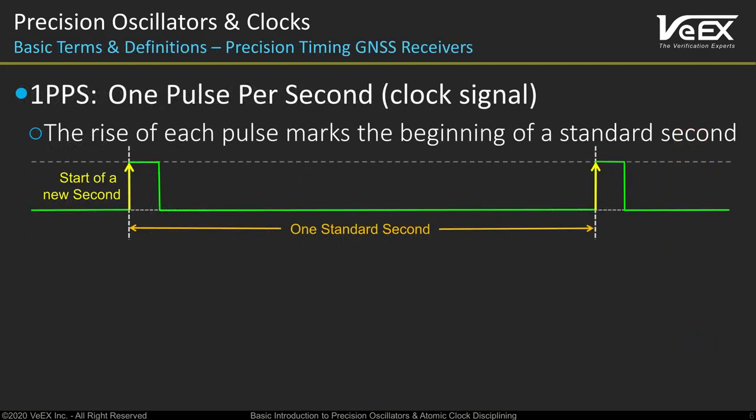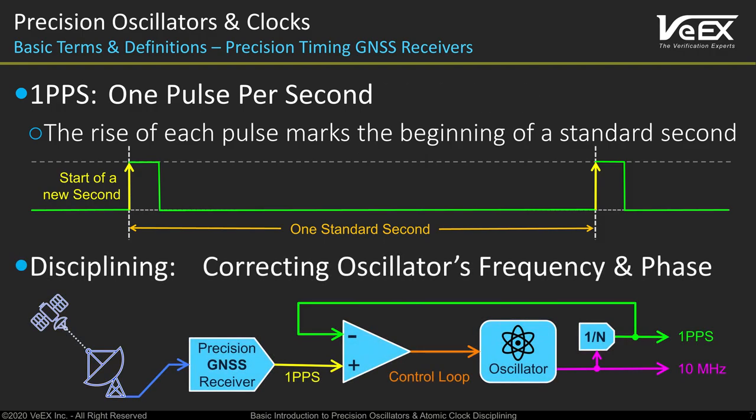The 1 pps signal is used for time synchronization. Its pulses act like the pendulum for modern precision clocks — the constant tick-tock signal that makes seconds increment and whole systems work in unison. The 1 pps period is exactly the length of 1 second, and the rising edge of each pulse is aligned with the start of the standard second. A process called disciplining is used to align local 1 pps pulses to the standard second and correct the oscillator's frequency, using reference signals from Global Navigation Satellite Systems, or GNSS.